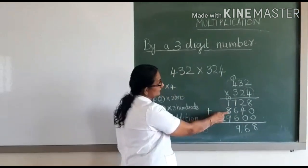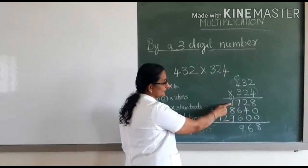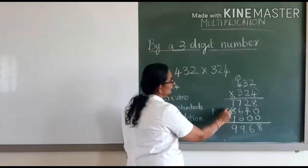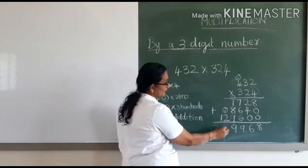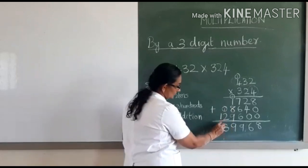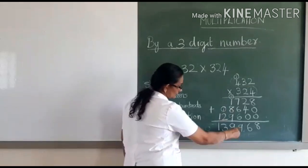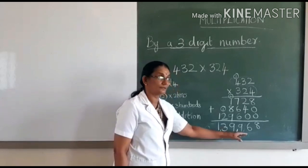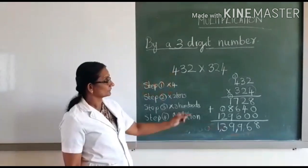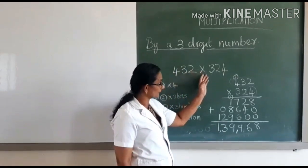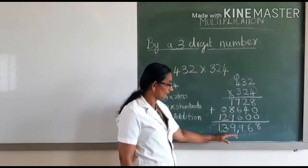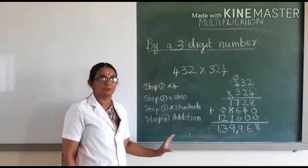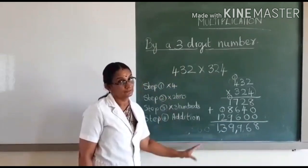Nine plus eight is seventeen. Seventeen plus one is eighteen, and eighteen plus one is nineteen — carry over. Two plus one is three, and one is written here. So the answer is one lakh thirty-nine thousand nine hundred and sixty-eight. The product of four hundred and thirty-two and three hundred and twenty-four is one lakh thirty-nine thousand nine hundred and sixty-eight. This is how we multiply a three-digit number by a three-digit number.